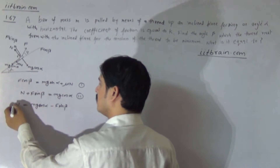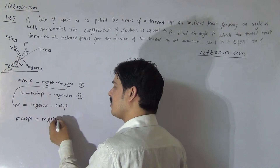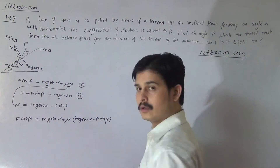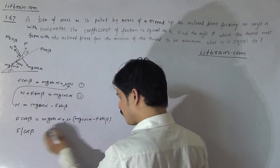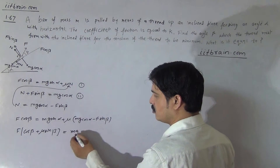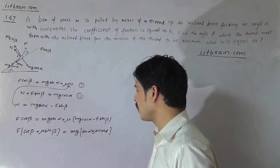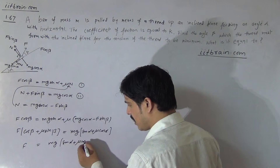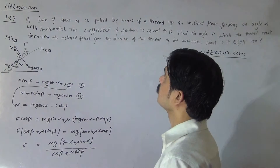Substituting the value of N into the first equation, we get F cos beta equals mg sin alpha plus mu times (mg cos alpha minus F sin beta). Solving for F, the value of F equals mg(sin alpha plus mu cos alpha) divided by (cos beta plus mu sin beta).